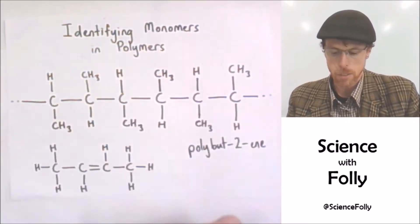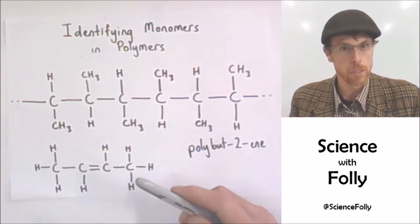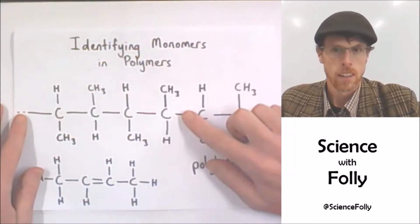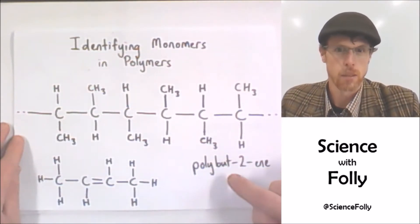Because this H is up and this H is down, it would have formed from a cis or a trans. That's right, it would be a trans-but-2-ene.